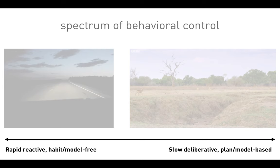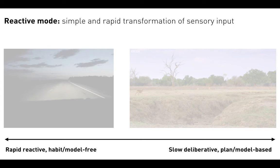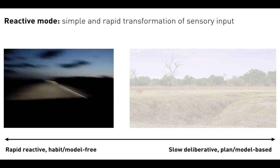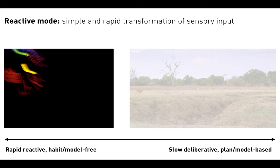This is a spectrum of behavioral control that many of you will be familiar with. On the left, something we could call reactive mode — simple and rapid transformations of sensory input to motor output. For example, driving at night and you see a deer — you don't have a whole lot of things you can plan or deliberate over, so you do a simple motoric response of swerving.